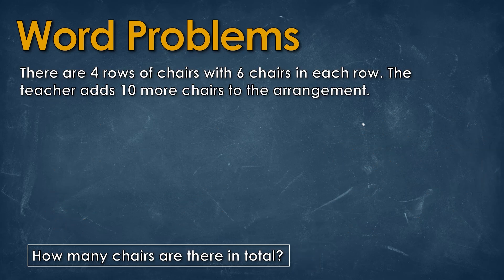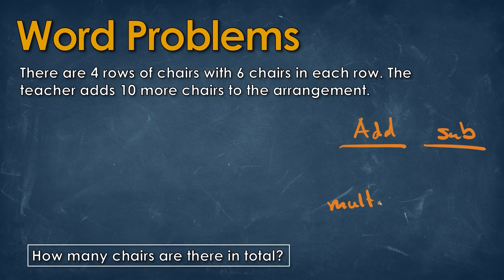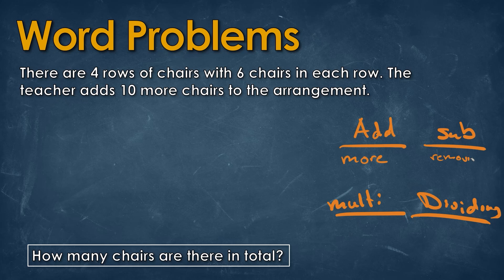Now for this one, remember we need to figure out what sort of keywords can tell us if we're adding, subtracting, multiplying, or dividing. For add, it would be like 'more.' For subtracting, it would be 'removing' or the word 'left.' For multiplying, it would be the word 'each' — but it would be in the paragraph. Division would be 'divide,' or we'd see 'each' in the question.